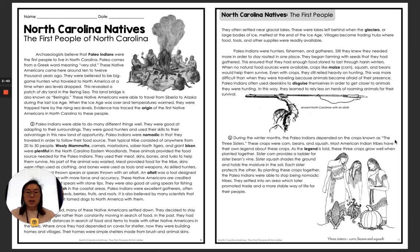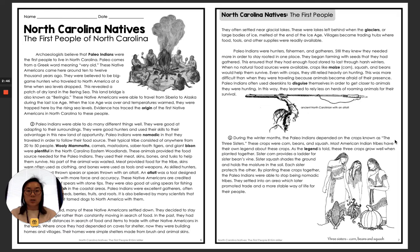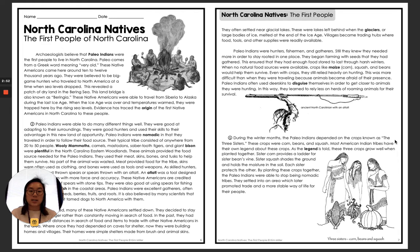If we look over on the second page, we're still looking at our bold vocabulary words. Our first one is glacier, and again it gives us the definition right in our passage. A glacier is a large body of ice which melted at the end of the ice age.